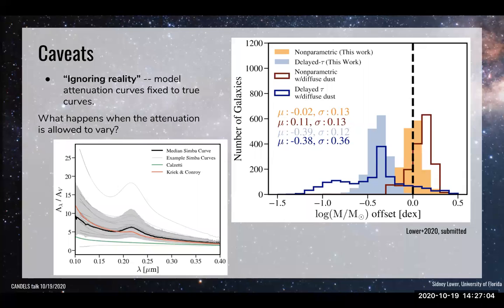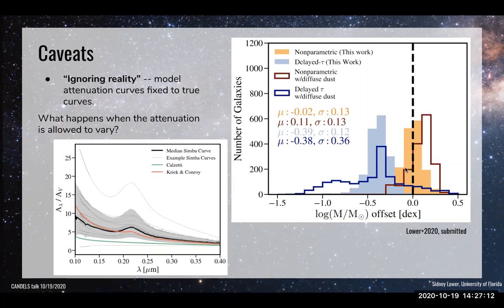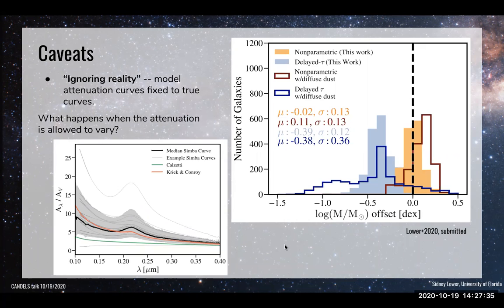This plot shows what happens when we include a variable dust attenuation model. The red-orange is the non-parametric and the blues are the parametric delayed tau. Something surprising is that the non-parametric is not too much impacted by the inclusion of a variable dust attenuation model, whereas the parametric certainly is. My current work has been understanding this in detail.